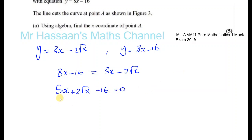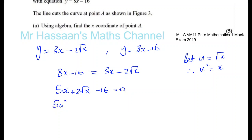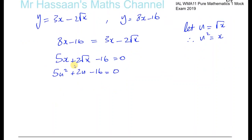To solve this equation, we have x to the power of a half — the square root of x — which doesn't look like a standard form. So I'll introduce a substitution: let u equal the square root of x, which means u squared equals x. Everywhere I see x I replace it with u squared, and everywhere I see root x I replace it with u. So 5x becomes 5u squared, giving 5u squared plus 2u minus 16 equals 0. This is now a quadratic equation.